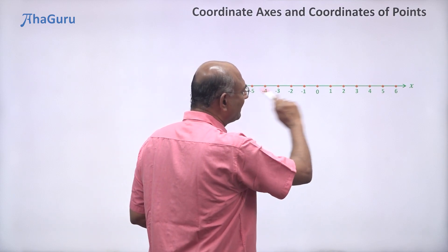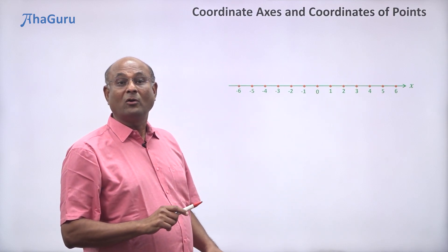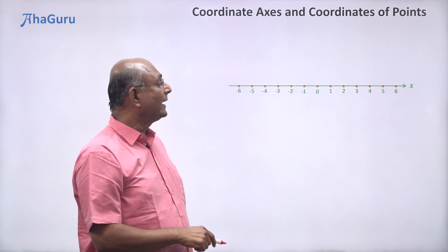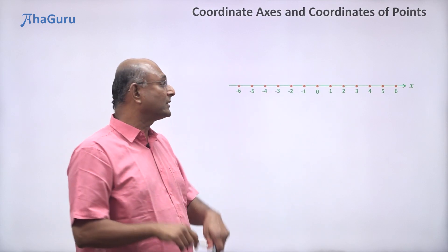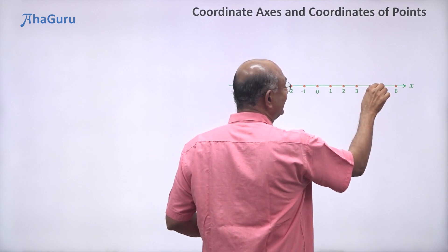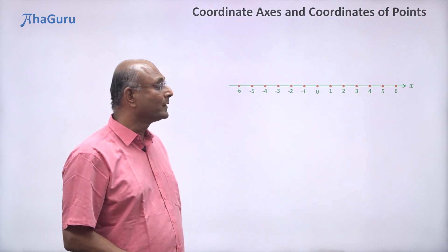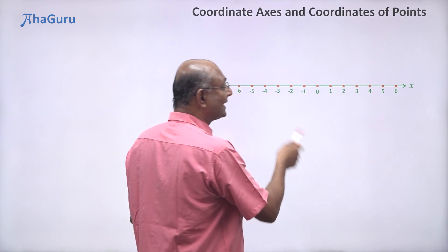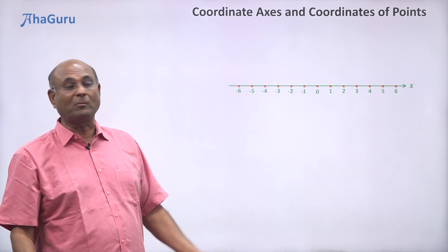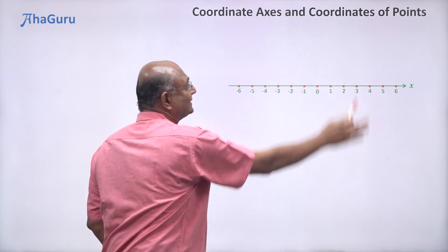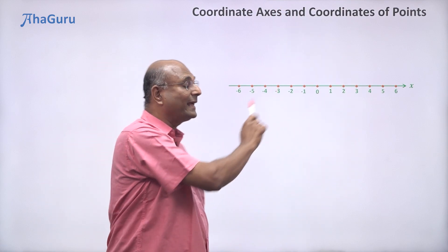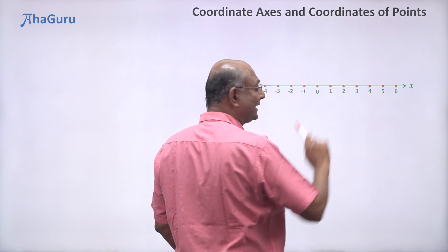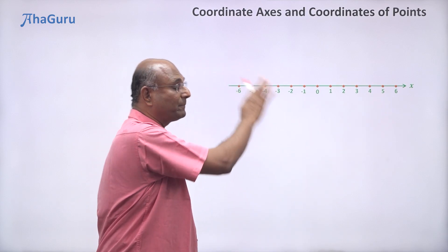Now, suppose I had only a number line and I asked you: what is this point? You can say x equals 2. And if I ask you what is x equals 5, you point here and say this point is x equals 5. But suppose I wanted to talk about a point that doesn't lie on the number line — we can't really talk about it. If I want to talk about points everywhere on the plane, the number line is not enough. With just one number line, we can't talk about points on the plane.